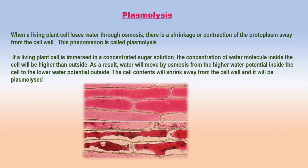Plasmolysis. When a living plant cell loses water through osmosis, there is a shrinkage or contraction of the protoplasm away from the cell wall — this phenomenon is called plasmolysis. If a living plant cell is immersed in a concentrated sugar solution, the concentration of water molecules inside the cell is higher than outside. As a result, water moves by osmosis from the higher water potential inside the cell to the lower water potential outside, and the cell contents shrink away from the cell wall.